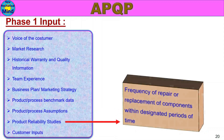Product Reliability Studies: frequency of repair or replacement of components within designated periods of time. In the Product Reliability Study, the warranty period fixed is very important — why we have a product in the field and what the repair or replacement frequency is. The Endurance Test and Performance Test will be conducted.